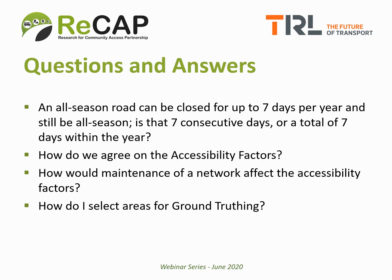Second question: how do we agree on the accessibility factors? We've given two examples in the presentation — by zone or by district. It's up to each country to find something practical and workable that everybody can agree to. It's up to the country to agree among the various stakeholders what the climatic zones should be, whether there are significant differences in impassibility in different terrain areas, and so on. The actual numbers used for the factors should be defined based on local knowledge and should be sense-checked by ground truthing as described in the presentation.